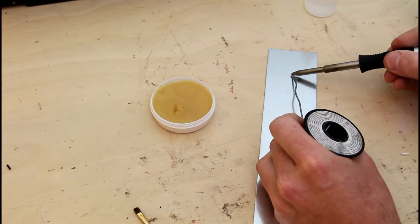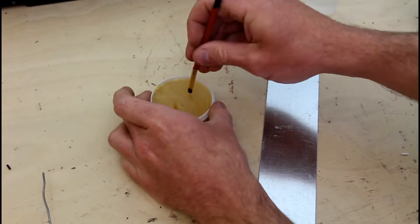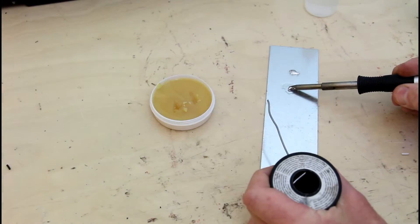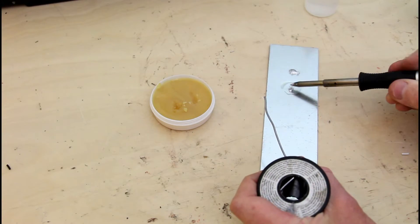Speed Flux works on many different types of metals, such as this piece of galvanized steel. As you can see the Speed Flux makes the solder bond readily, but regular flux doesn't do so well.